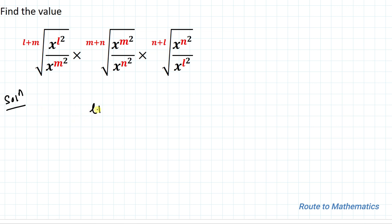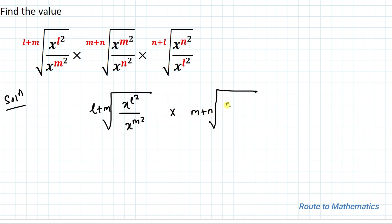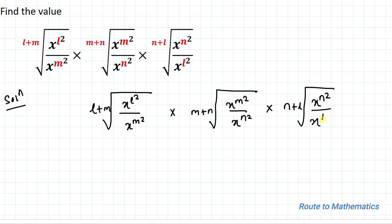We have the (l+m)th root of x to the power l squared divided by x to the power m squared, multiplied with the (m+n)th root of x to the power m squared divided by x to the power n squared, multiplied with the (n+l)th root of x to the power n squared divided by x to the power l squared.